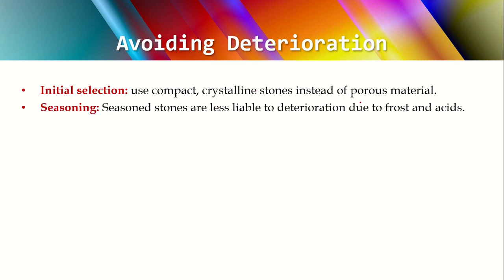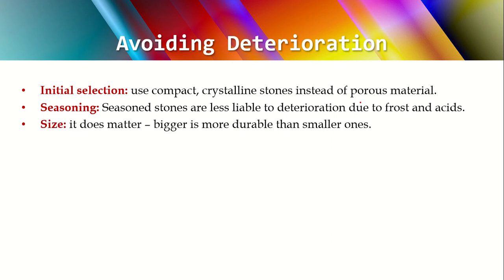Next is seasoning. Seasoning means removing the moisture content from the stones. Stones obtained from quarrying will have some initial moisture content, called quarry sap. You have to remove that, and this process is called seasoning. Once you season the stones, they are less vulnerable to attack.